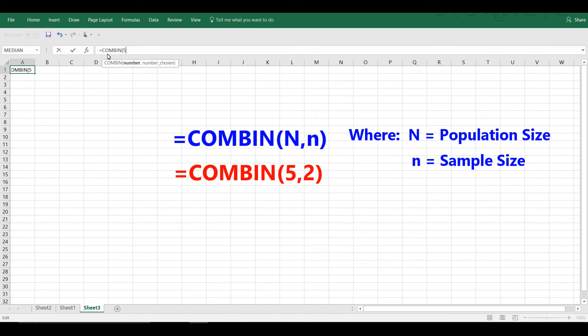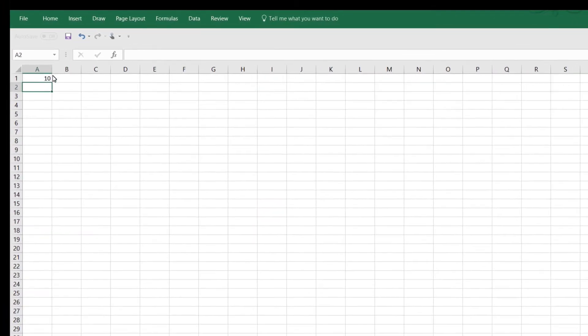So big N would be five, and little n would be two. And let's close the parentheses and see what happens. And you can see we have ten.